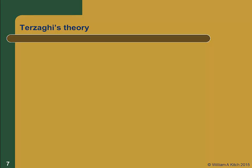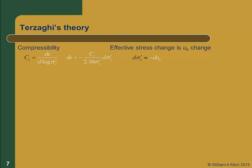Thus far we've considered continuity and Darcy's law. Now let's add in our consolidation compressibility relationships. Recall that c sub c is the change in void ratio versus the change in the log of effective stress, or dE by d log sigma prime z. Using the derivative of a logarithm, we rewrite this as dE equals negative c sub c over 2.3 times sigma prime z times d sigma prime z. After the initial stress is applied, there's no change in total stress, so all the change in effective stress is due to a change in excess pore pressure: d sigma prime z equals minus du sub e. Substituting gives us the fourth equation.